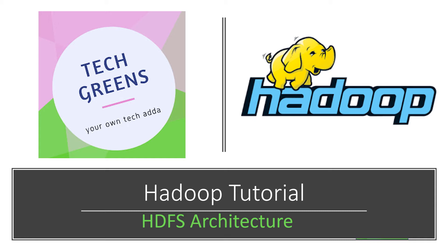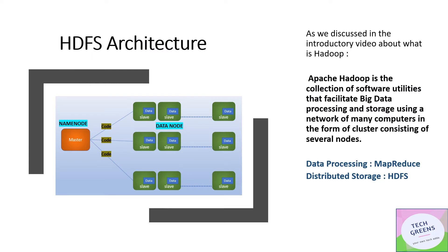Welcome to Tech Greens. In continuation of our Hadoop tutorial, in this second video we'll discuss the architecture of Hadoop Distributed File System. As discussed in the introductory video, Hadoop is a collection of software utilities that facilitates big data processing and storage on a cluster of nodes, where nodes are simple commodity hardware. The computation happens in a distributed way. There are two major components: distributed storage, known as HDFS, and data processing, which is MapReduce.